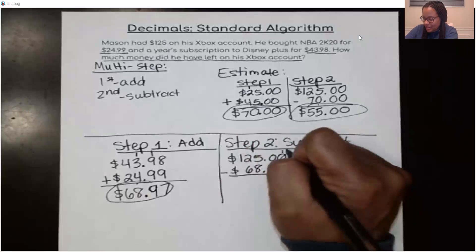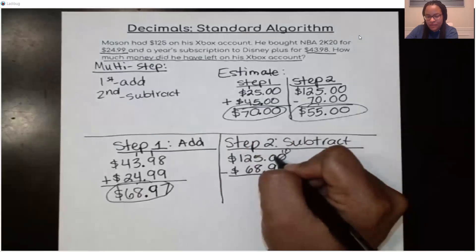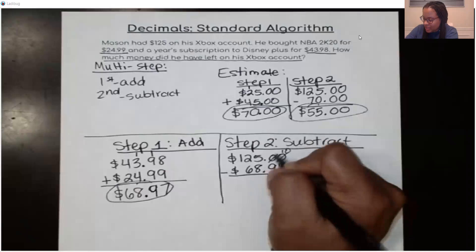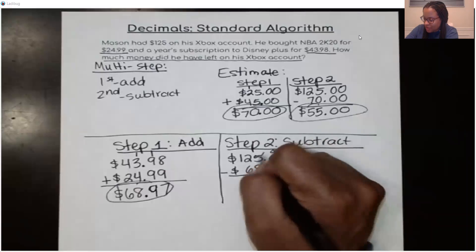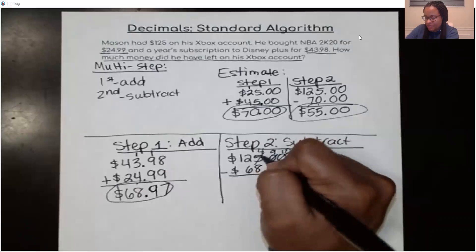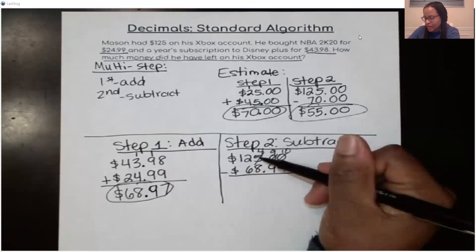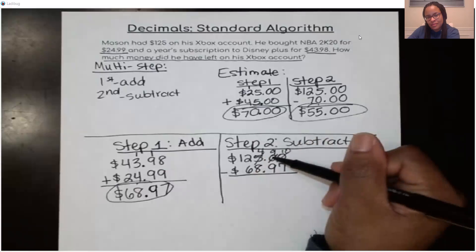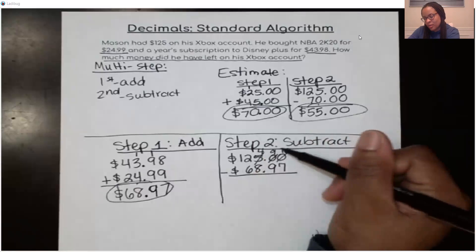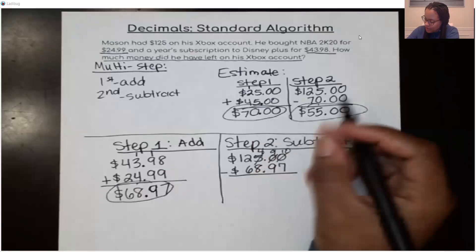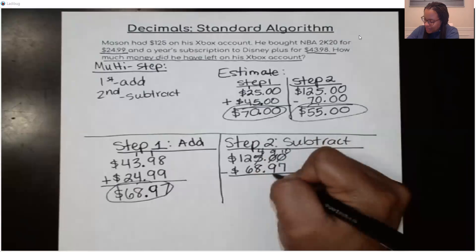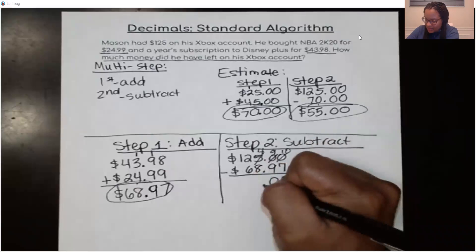So this becomes a 10. I'm going to have to borrow a 10. But I can't borrow it from this 10th place right here. Because there's nothing to borrow from. So this becomes a 9. Because this place has to also borrow in order to give me what I need. So really, I borrowed from the 1's place over here. And this 10th came over here. And then that 10th went. And then one of those 10ths went to the 100th place. All right. So 10 minus 7 is 3. 9 minus 9 is 0. Bring down my decimal.